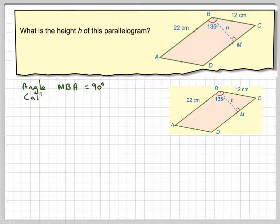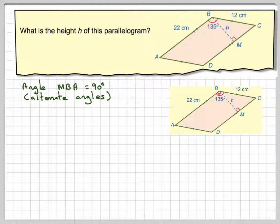So the angle MAB is equal to 90. So what I'm saying is that MBA, this angle here, is actually equal to 90 degrees. Now, the reason for that is alternate angles. So we've got Z angles.